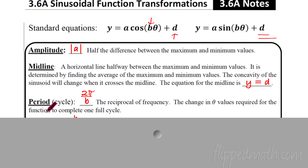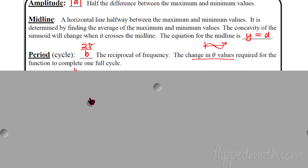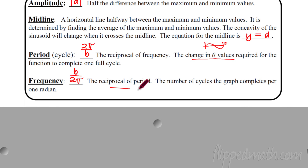If you put a number in front, it's going to change the period. The period is the change in theta values required for the function to complete one full cycle. In other words, for sine, how far do you have to go before you complete the cycle? Normally it's two pi — you go up, down, up. That normally happens at two pi for a regular old sine curve. But now we're going to change the number in front of theta. By doing that, we're actually going to squish this curve in and stretch it out. The formula now for the period will be two pi over b. And we always need to remember that the frequency is the reciprocal of the period, which means you just flip over the period. So that means it's b over two pi. It still tells you the number of cycles the graph completes for every one radian in angle measure.